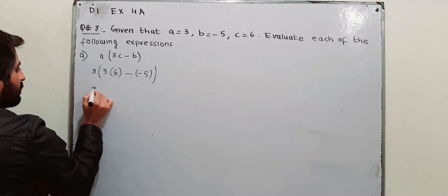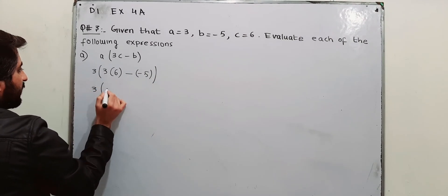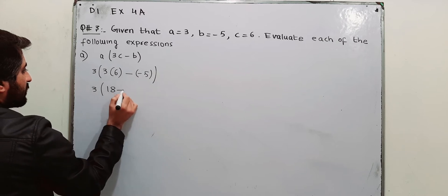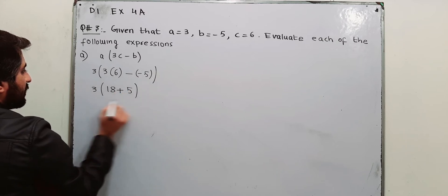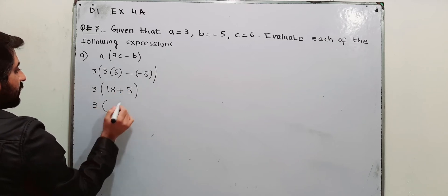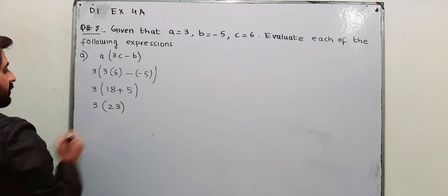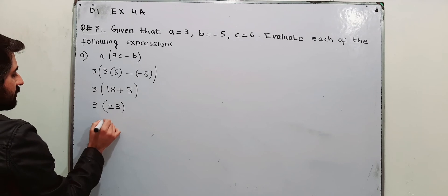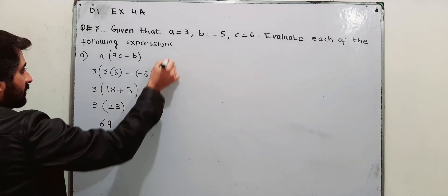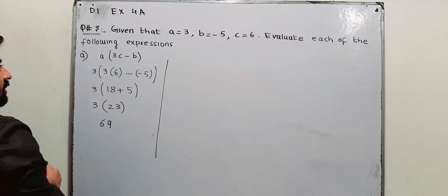That will be equal to 3 times 18 minus into minus plus 5. That becomes 3, 18 plus 5 is 23 and 23 into 3 is 69. This is the answer for part number A.